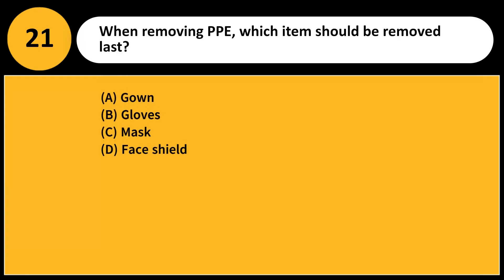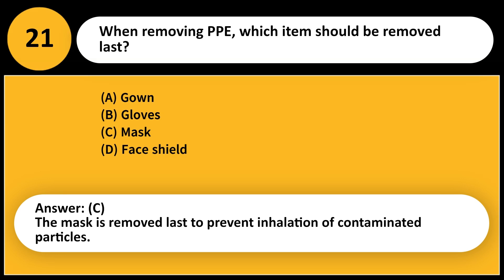When removing PPE, which item should be removed last? A. Gown. B. Gloves. C. Mask. D. Face shield. Answer: C. The mask is removed last to prevent inhalation of contaminated particles.